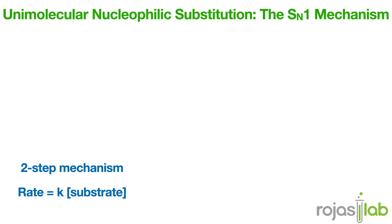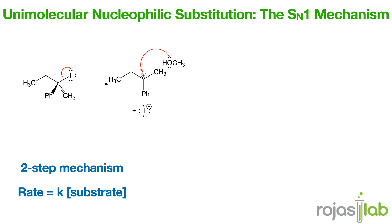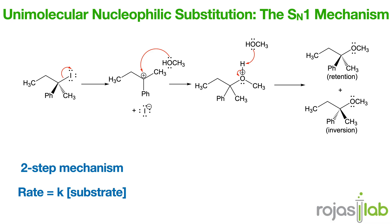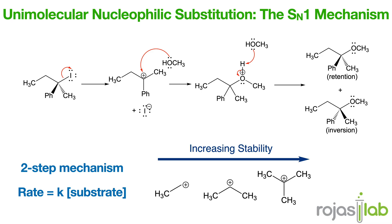Next up is the SN1 mechanism. This is a two-step, unimolecular substitution mechanism proceeding via carbocation formation. In the first step of the mechanism, the leaving group departs, forming a carbocation intermediate. Next, the nucleophile can attack the carbocation to form the product. The rate is equal to the rate constant K times the concentration of our starting material. This reaction is favored by tertiary substrates because they form more stable carbocations. The product can be racemic due to planar carbocation intermediates.